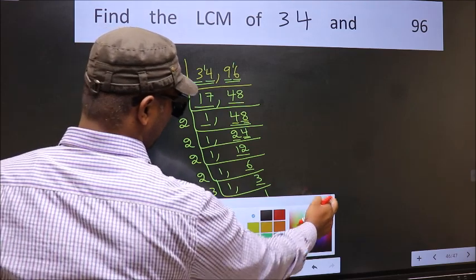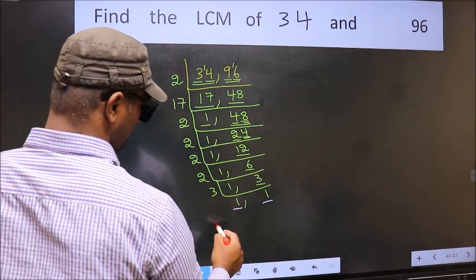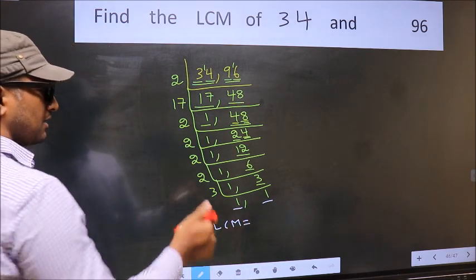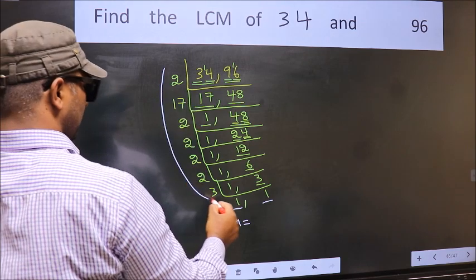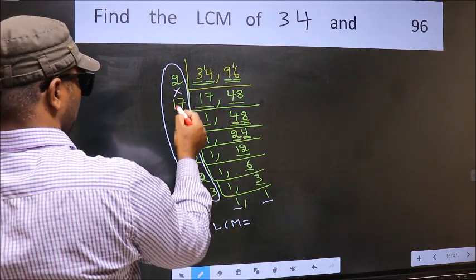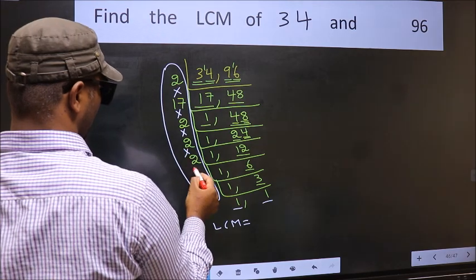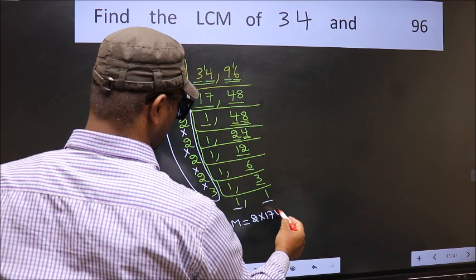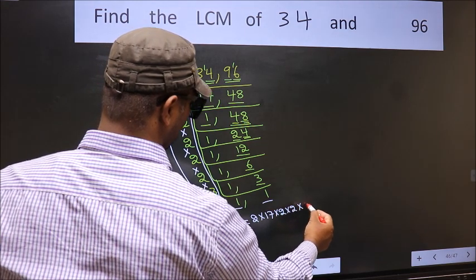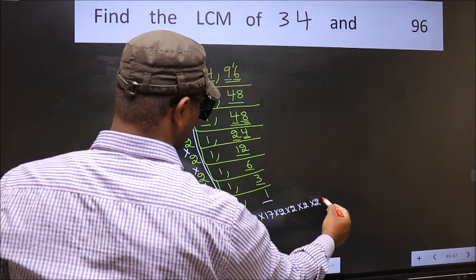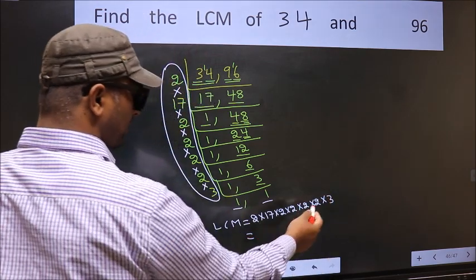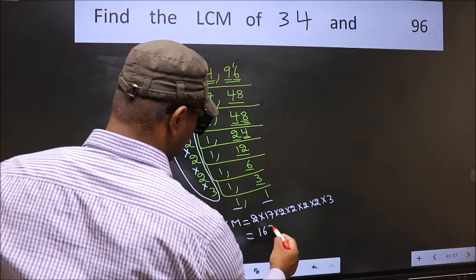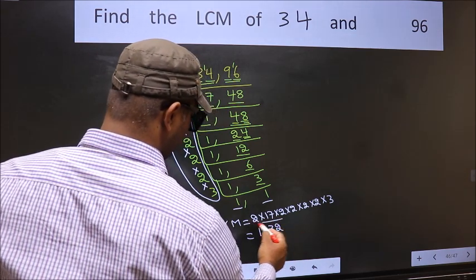We got 1 in both places, so our LCM is the product of all these divisors: 2 times 17 times 2 times 2 times 2 times 2 times 3. When we multiply these numbers, we get 1632 as our LCM.